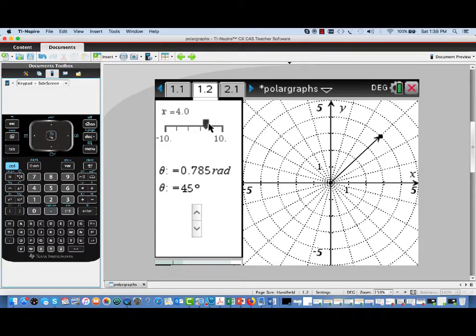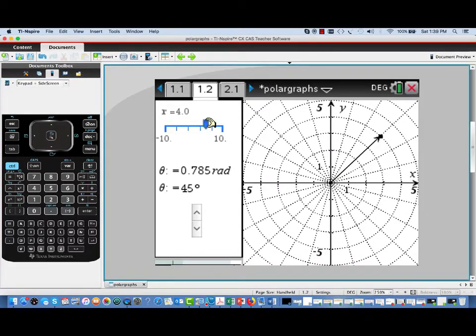If I change the radius using the slider, you'll see the point move out farther, or we can bring it in closer to the origin. In fact, we can make the radius negative, which means the point will be reflected through the origin. I'll go ahead and return this point to a setting of r equals 4.